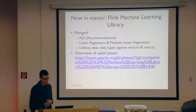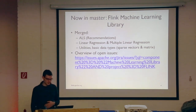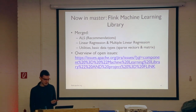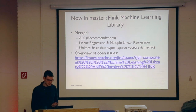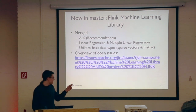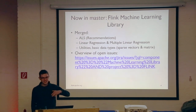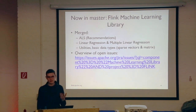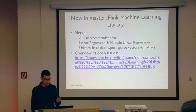We also started merging and working on the Flink machine learning library. We have the ALS algorithm that was published in our blog and merged into master. We also added linear regression and multiple linear regression, as well as a lot of utilities for basic data types and standard file formats. There's a short link for our Jira where you can see the list of open Jiras and get an overview of what we are planning to do, as well as opportunities to contribute.